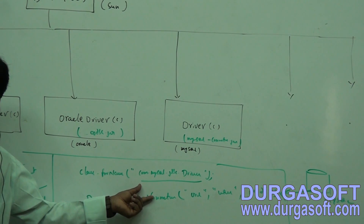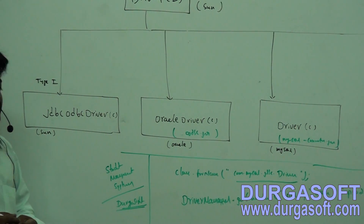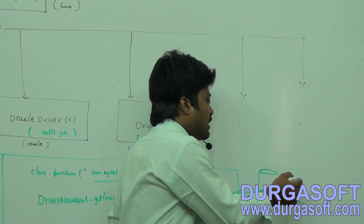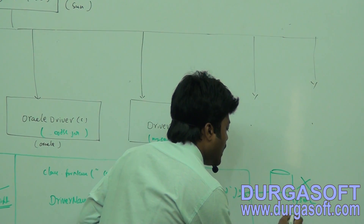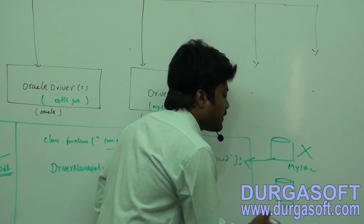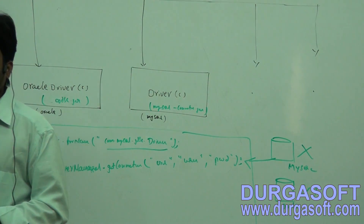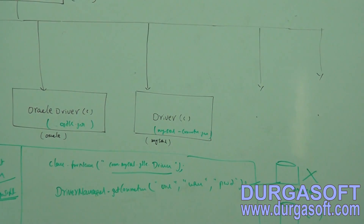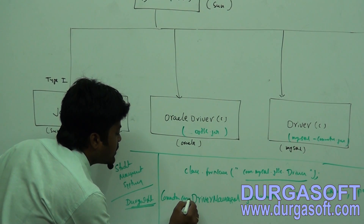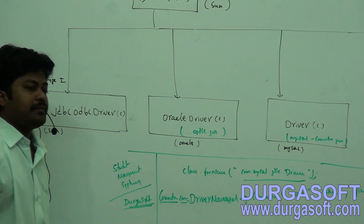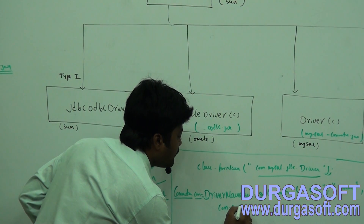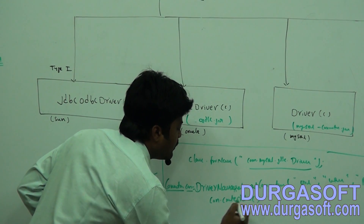The connection returned by DriverManager.getConnection() — is it an interface or an implementation class? Connection is an interface. Using this connection, we can create a Statement, a PreparedStatement, or a CallableStatement. Any type of statement can be executed using this connection. When moving from MySQL to Oracle, the method names don't change — they are the same for all databases.